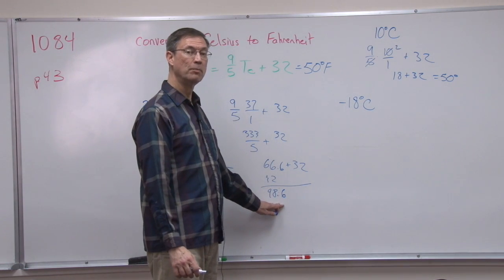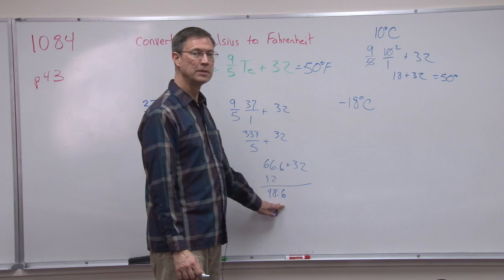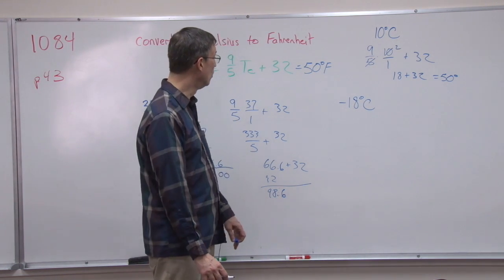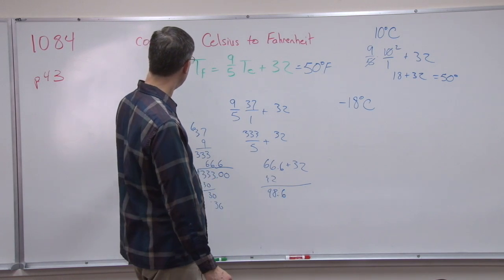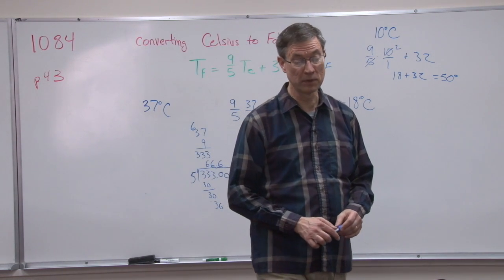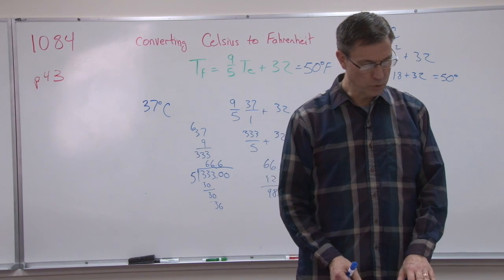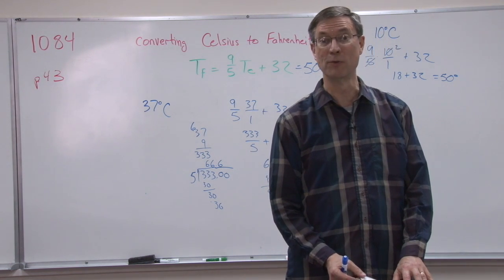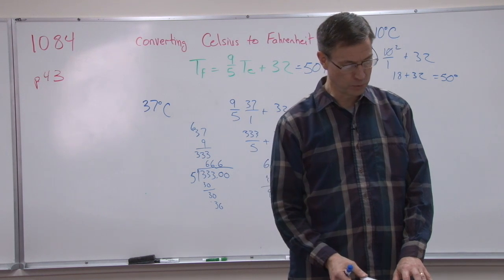Ah! So this is the normal body temperature, if you recognize that. When mom says, no, you don't have a fever, your temperature is 98.6, that's normal body temperature. And so on the Celsius scale, we see that that's 37 degrees. So when you get to problem 7 in your homework on page 44, this problem should help you do that.